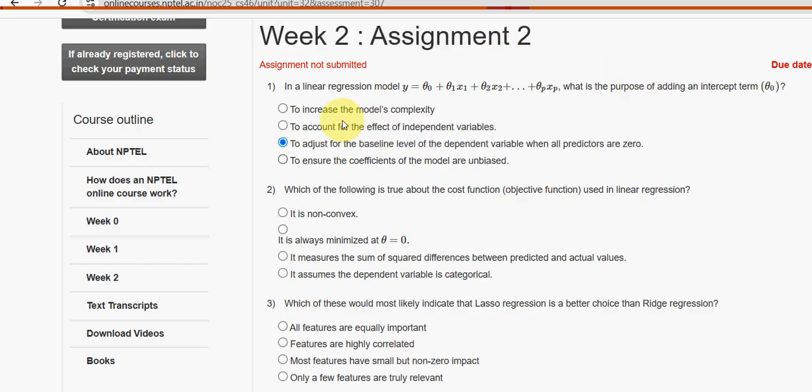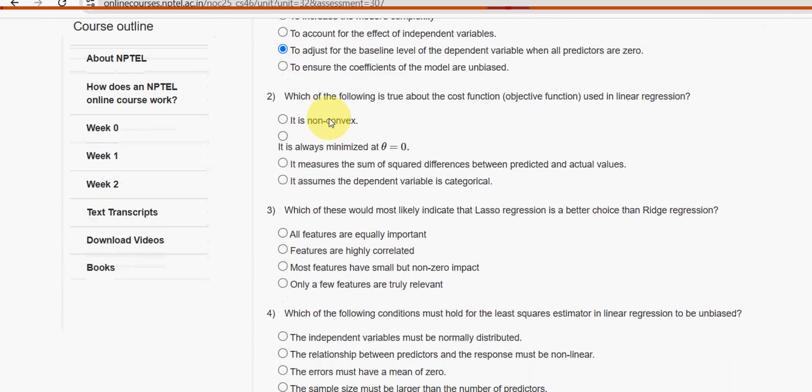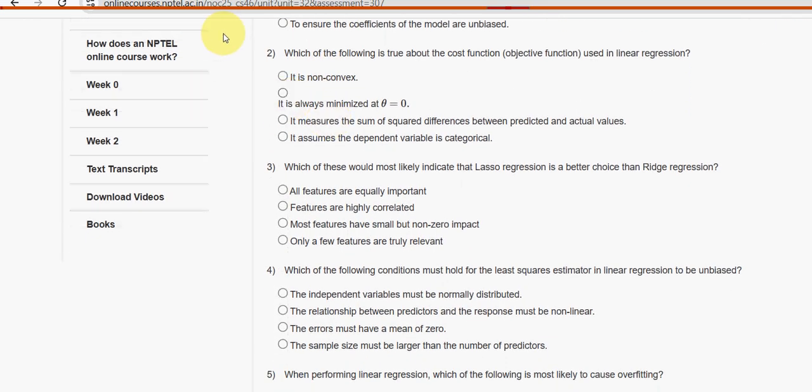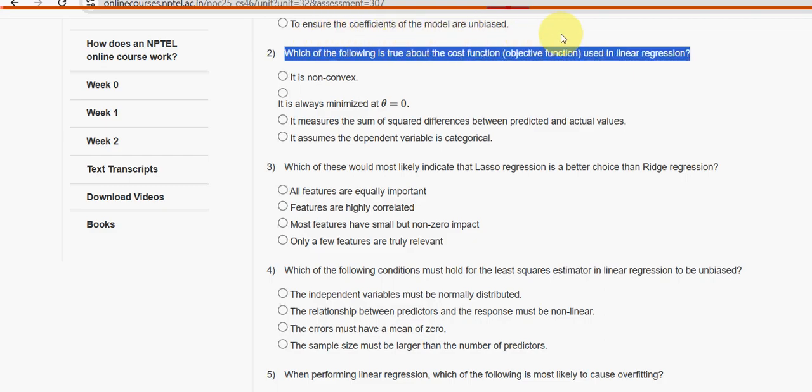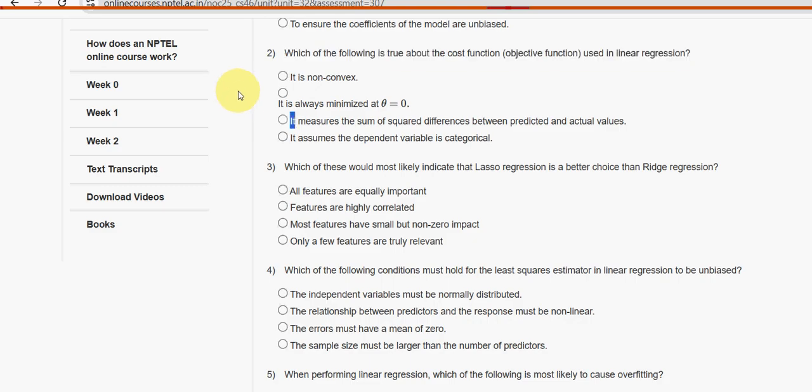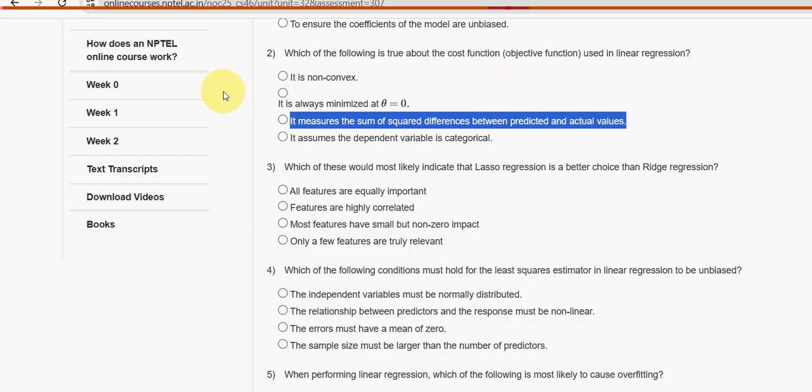Now let's move on to the second one. Which of the following is true about the cost function, that is objective function, used in linear regression? For the second question, once again the third option is the probable solution. It measures the sum of square differences between predicted and actual values. Mark third option as the probable solution for the second question.